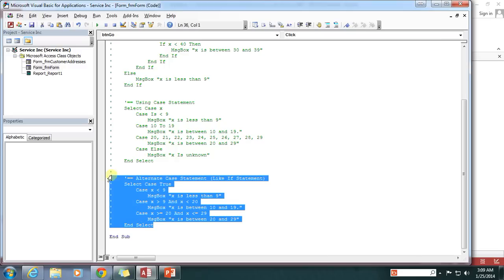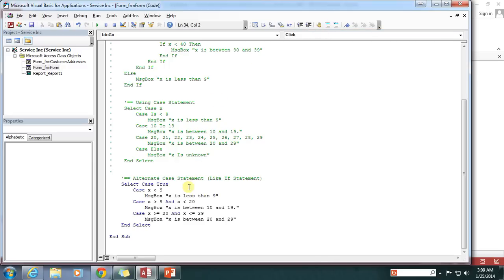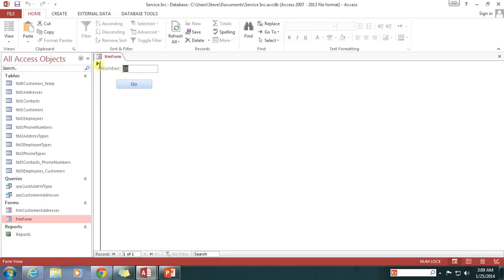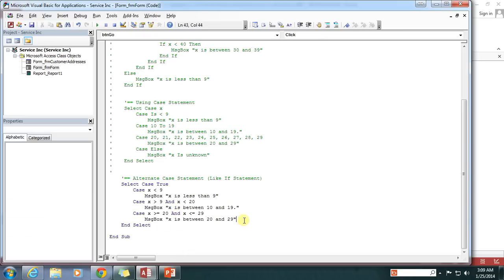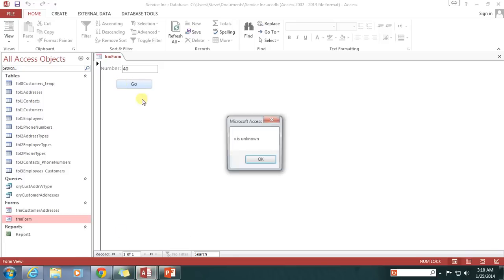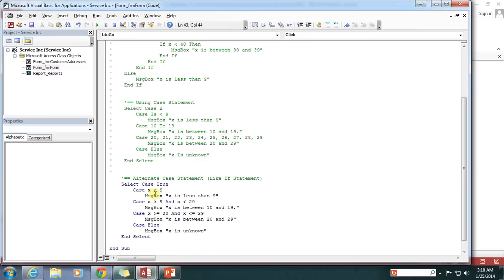And then just to show you that that other alternative way that we can use the case statement also works here. All right? But notice that I don't have any else statement. So when I go to do 40, it should just skip right on through here. Yep. Nothing happens, right? But if I wanted to, I could do case else. Message box. X is unknown. And we're going to get essentially the same result. X is unknown.